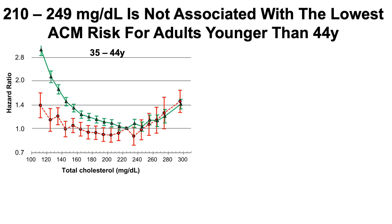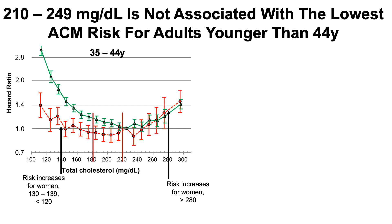Where the data gets more interesting is in the younger age groups. For 35 to 44-year-olds, the 210 to 249 range that was optimal in older groups is no longer optimal. For women in this age group, 180 to 220 was associated with the lowest risk of death for all causes. Risk increases only significantly at levels of 130 to 139 and less than 120. Risk also increases at higher levels greater than 280, but notably, having lower cholesterol below 140 doesn't seem to impart higher risk compared with greater than 280 — a divergence from the older age data.